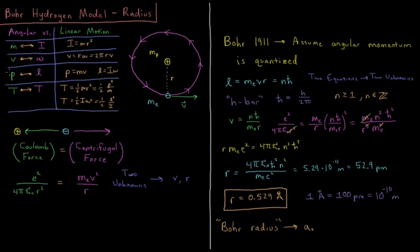For momentum, linear momentum goes to angular momentum. Linear momentum is mass times velocity, m times v. Angular momentum is the moment of inertia, the analog of mass, times angular velocity, the analog of velocity, which in the case of perfect circular motion is going to be mass times velocity times radius.